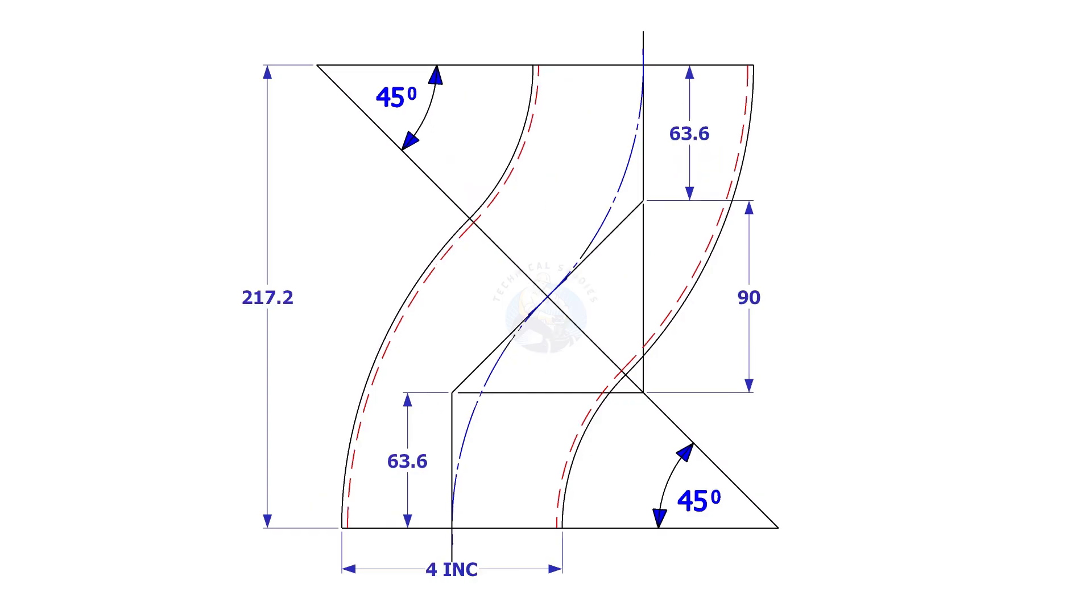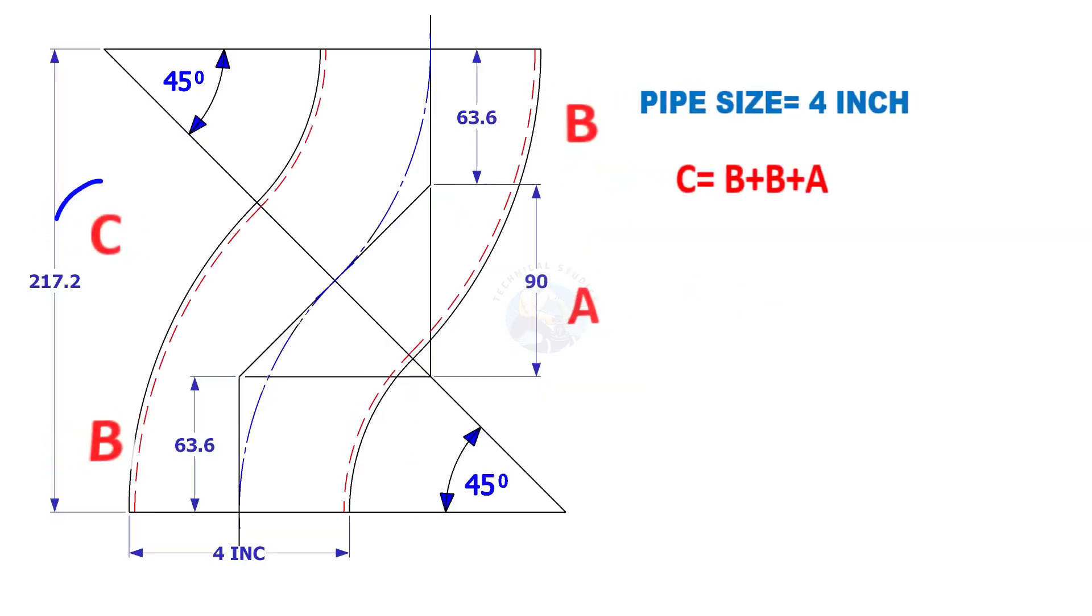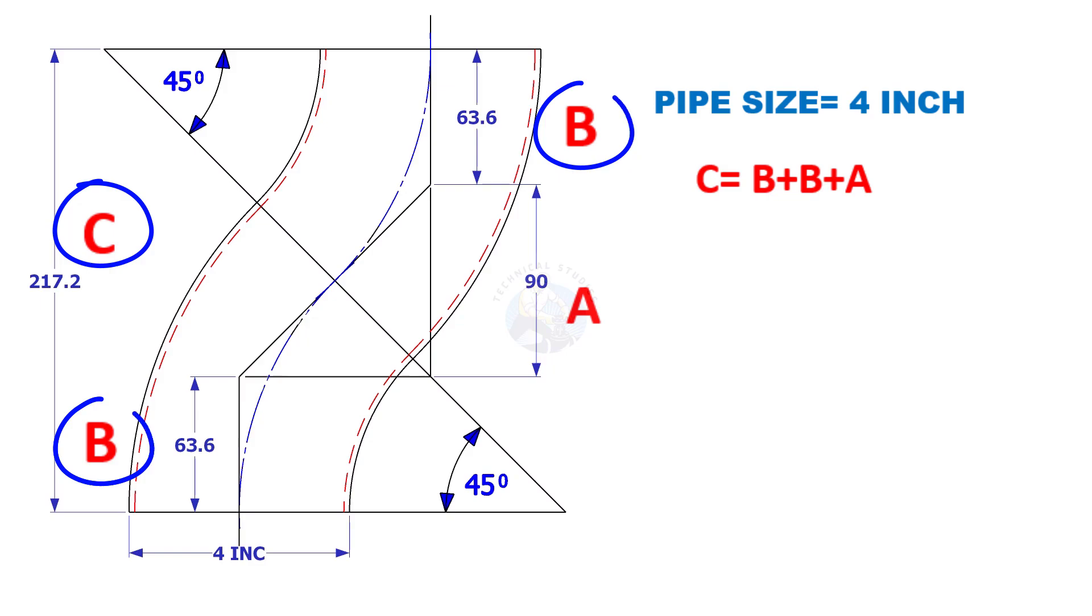Assume that the elbow diameter is four inches. We have to calculate the elbow center of a 45 degree elbow. The height c is equal to b plus b plus a.